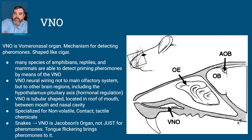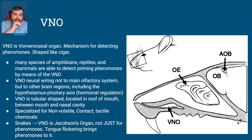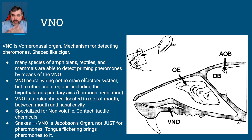The VNO — the vomeronasal organ — is a mechanism for detecting pheromones. It has a cigar shape and is found in rodents and snakes, though snakes actually have what's called Jacobson's organ, which is similar but not the same. With snakes, they stick their tongue out and flick it back, bringing the chemical to the Jacobson's organ. So tongue flickering is very much information gathering for snakes.